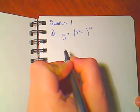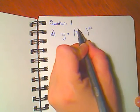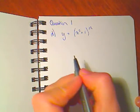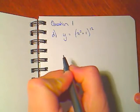For this function we want to find the derivative. What I have here is a function inside another function. So the function of a function rule is also known as the chain rule.